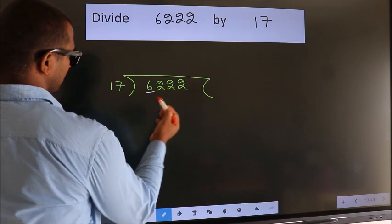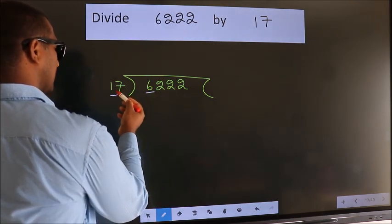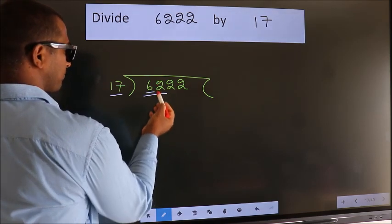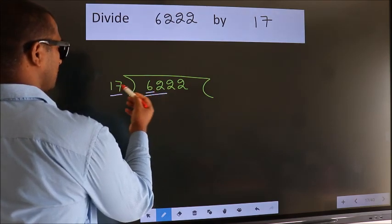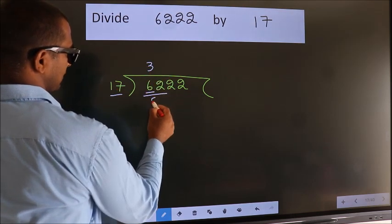Here we have 6. Here 17. 6 is smaller than 17, so we should take 2 numbers, 62. A number close to 62 in 17 table is 17 threes, 51.